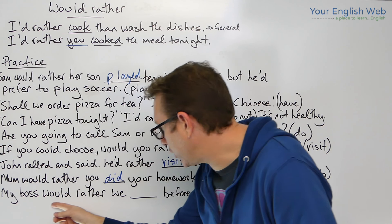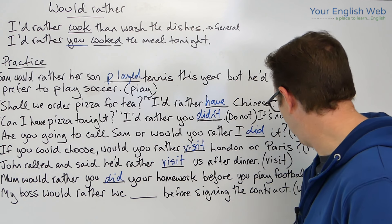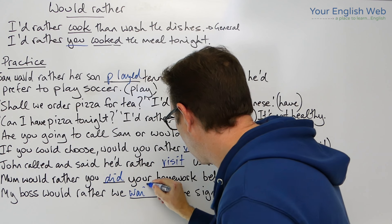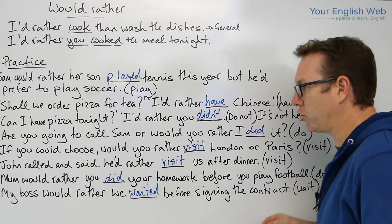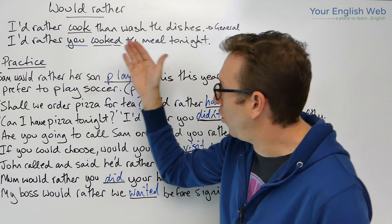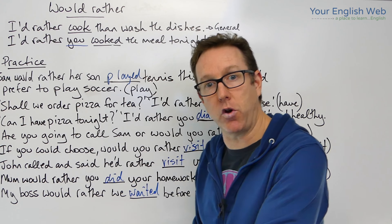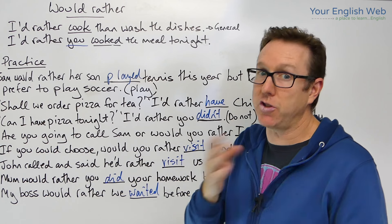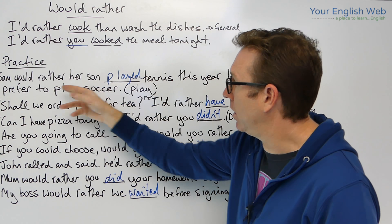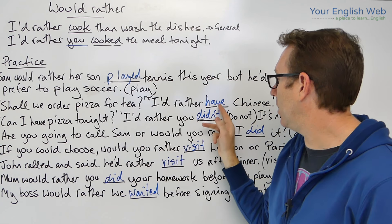The last one: 'My boss would rather we [wait] before signing the contract.' We understand the rule — 'we' is a second subject — so: 'My boss would rather we waited before signing the contract.' We can see how it works: if we involve a second subject, we change the verb to the past tense. Remember, it's not a past meaning — it's present or future — but we use the past form, the unreal past.